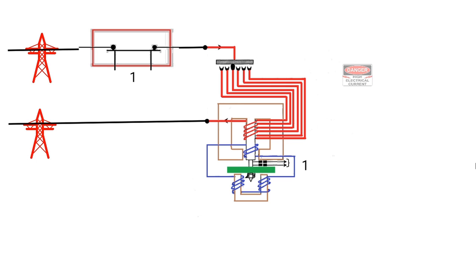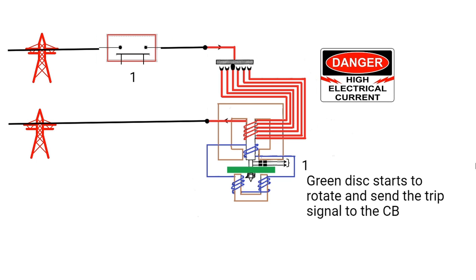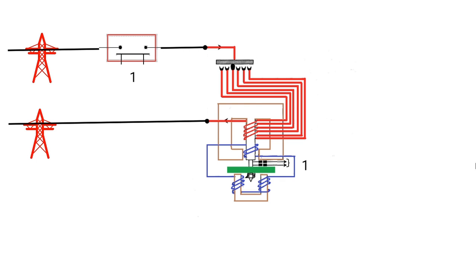When there is high current in the red line, it induces high current in the blue line which rotates the green disc rapidly. This trips the circuit breaker 1 and opens, so the system is protected from the overcurrent fault quickly.